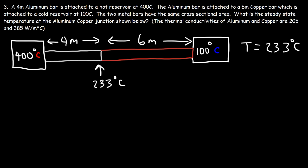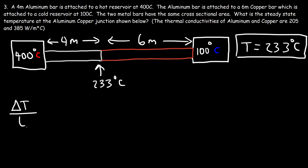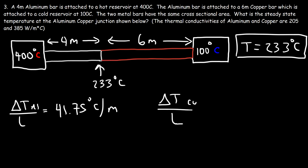Now let's calculate the temperature gradient in each bar. For the aluminum bar: the temperature difference is 400 minus 233 = 167°C divided by a length of 4 meters, giving 41.75 degrees Celsius per meter. For the copper bar: 233 minus 100 = 133°C divided by 6 meters gives a temperature gradient of 22.167 degrees Celsius per meter.